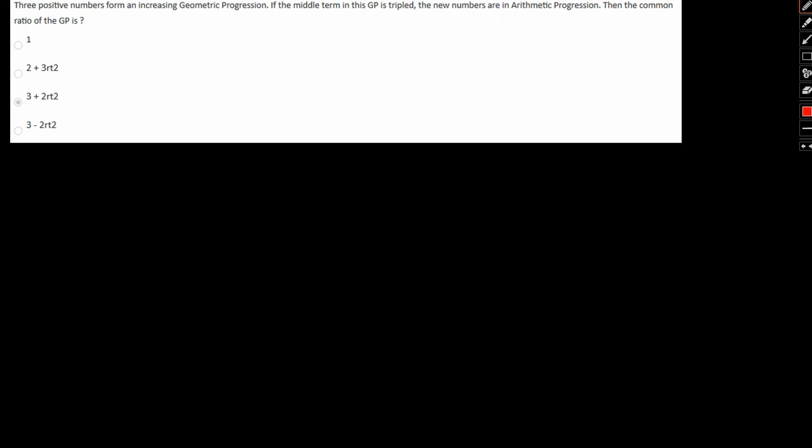Three positive numbers form an increasing geometric progression. If the middle term in this GP is tripled, the new numbers form an arithmetic progression. Then the common ratio of the GP is given by... so let's take a look. Let first term equal to A and common ratio equal to R.